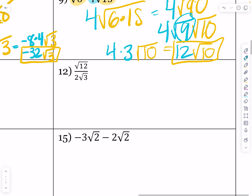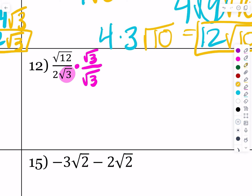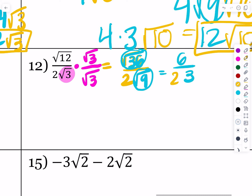This one does have a radical in the denominator — the issue is root 3. We cannot leave that root 3 in the denominator if it's going to be fully simplified. So we're going to rationalize the denominator by multiplying by root 3 over root 3, which is just multiplying by 1 but rewriting it so the radical is no longer in the denominator. That gives us the square root of 36 over 2 root 9. Root 9 is a perfect square — square root of 9 is 3, square root of 36 is 6. So that's 6 over 2 times 3, which is 6 over 6, equal to 1.